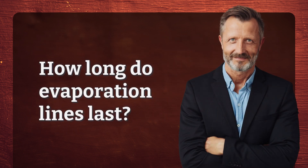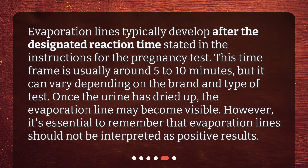How long do evaporation lines last? Evaporation lines typically develop after the designated reaction time stated in the instructions for the pregnancy test. This time frame is usually around 5 to 10 minutes, but it can vary depending on the brand and type of test. Once the urine has dried up, the evaporation line may become visible. However, it's essential to remember that evaporation lines should not be interpreted as positive results.